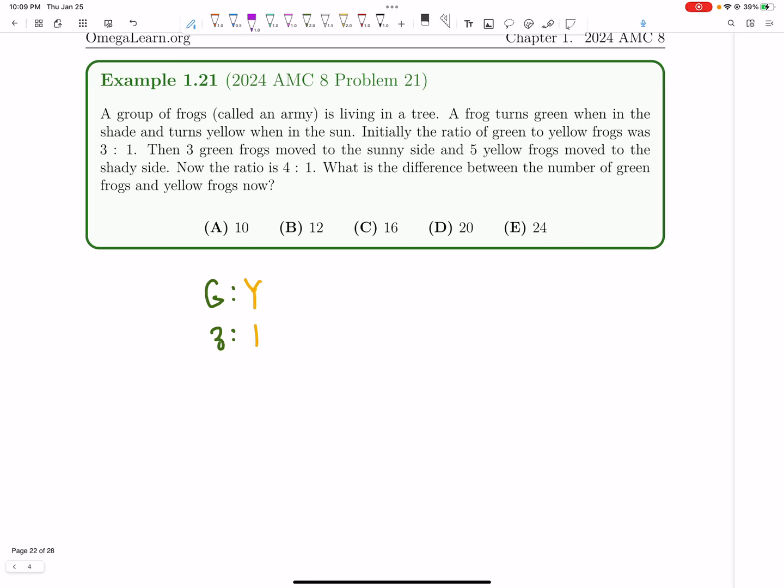Rather than doing this ratio, let's say we have 3x green frogs initially and x yellow frogs initially.